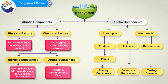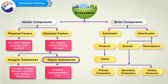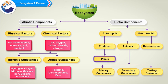Chemical factors further divide into two categories: inorganic substances and organic substances. Inorganic substances include hydrogen, oxygen, nitrogen, calcium, iron, sodium, and potassium. Organic substances include proteins, carbohydrates, fats, etc. Biotic components are either autotrophic or heterotrophic. Autotrophic includes producers, which are plants. Heterotrophic may be consumers (animals) or decomposers, i.e., microbes.